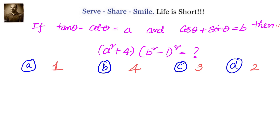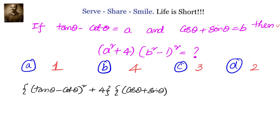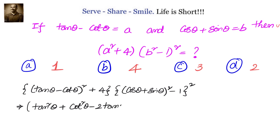a² plus 4 — I'll write it as (tan θ minus cot θ)², that is our a², plus 4, multiplied with b² minus 1. b is (cos θ plus sin θ) whole square minus 1, whole square. Now let's expand the first part: (tan θ minus cot θ)² will be tan²θ plus cot²θ minus 2·tan θ·cot θ, using the identity (a - b)² = a² + b² - 2ab, then plus 4 multiplied with...